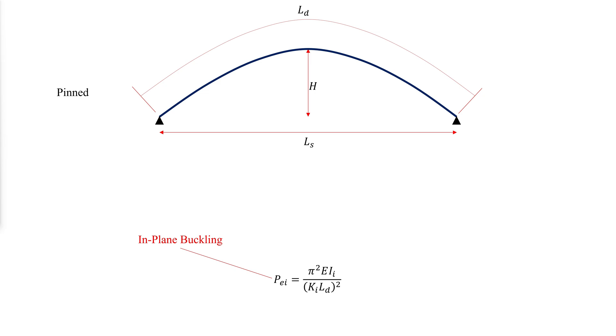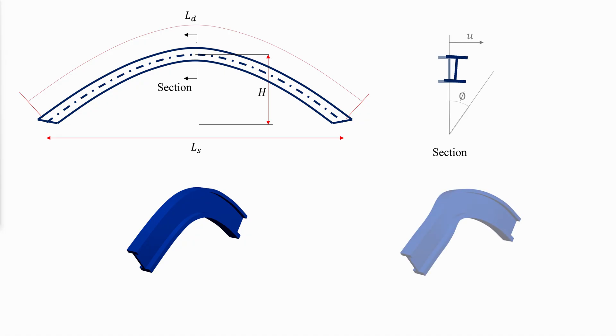The elastic in-plane critical buckling load is evaluated as follows, where E is the elastic modulus, I_i is the moment of inertia about the axis of curvature, and k is the effective length factor from the table previously shown.